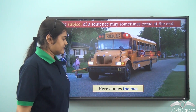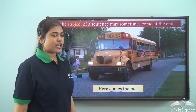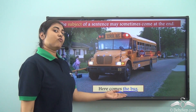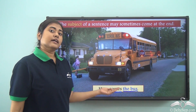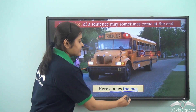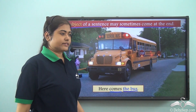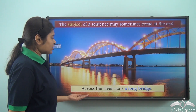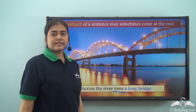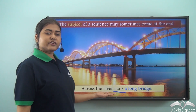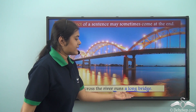'Here comes the bus.' What is the verb? 'Comes.' And what is the subject? The subject is 'the bus' — it is placed right at the end of the sentence. So the subject of a sentence may sometimes come at the end. Another example: 'Across the river runs a long bridge.' Here 'runs' is the verb, and what runs across the river? 'A long bridge' — so 'a long bridge' is the subject, placed at the end.